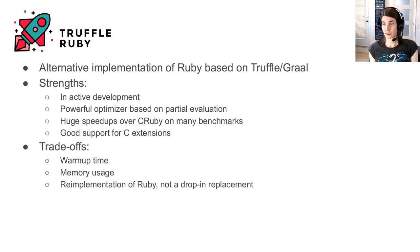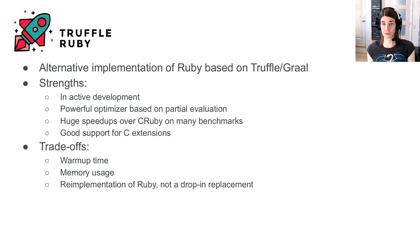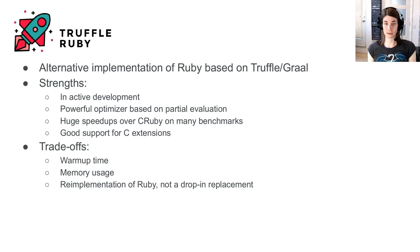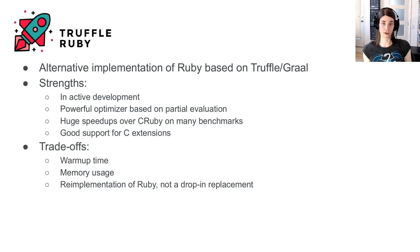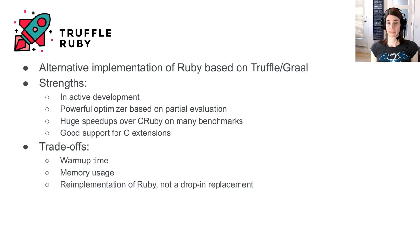TruffleRuby is a very interesting option — an alternative implementation based on Truffle and Graal. Its strengths include a very powerful optimizer based on partial evaluation, huge speedups over CRuby on many benchmarks, and good support for C extensions by emulating and compiling C code. Trade-offs include warm-up time, still an issue on many Truffle/Graal-based JITs, and much higher memory usage than CRuby, which matters when running a server with many processes.